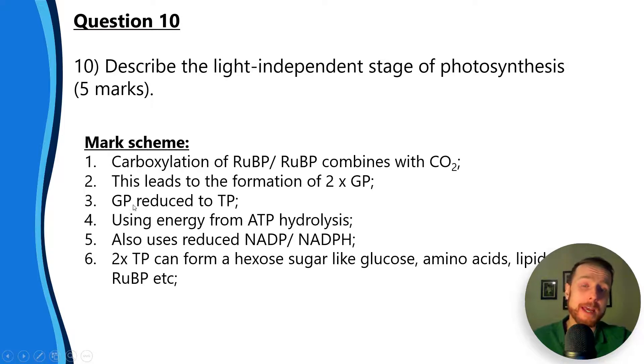Number three: GP is reduced to TP. Number four: using energy from ATP hydrolysis. ATP releases energy in small manageable amounts, so it's brilliant and it's broken down in a single-step reaction.